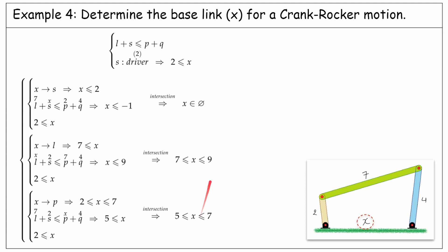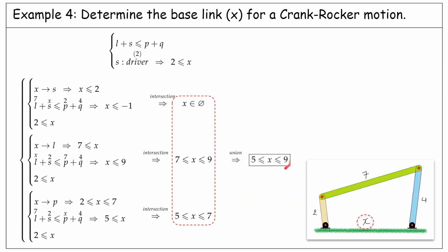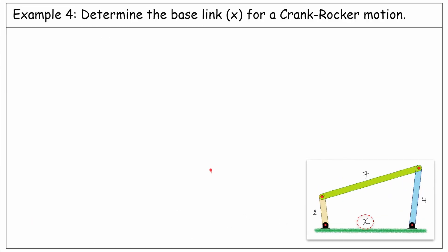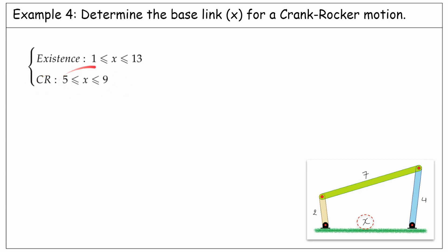Now that we have found the range for each case, the concluding length for the base link is the union of all these cases, which says X must be between 5 and 9. We then take the intersection from the obligation for the existence of the linkage, which says X must be between 1 and 13, and the crank-rocker requirements, which says X must be between 5 and 9. The intersection will contain the values between 5 and 9.